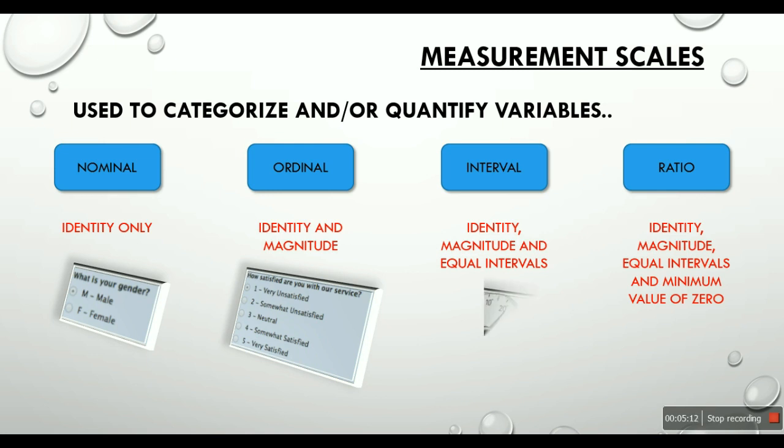When we talk about an interval scale of measurement, let's think of time. Time has units. Time is the identity. Magnitude is one o'clock, two o'clock, three o'clock, four o'clock, five o'clock. And between any two major units of time, the intervals will be of equal length. That describes an interval scale.